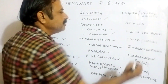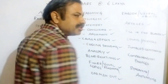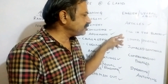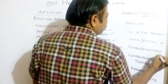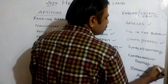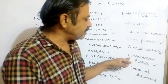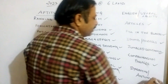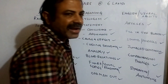Now coming to English: you may have articles, fill in the blanks with four options, idioms and phrases, jumble sentences, comprehension passage and questions based on that. These are the English topics. Only a few things are covered here in English, and some additional things have been added.